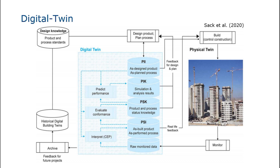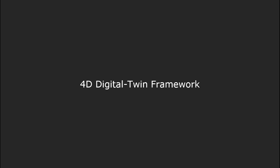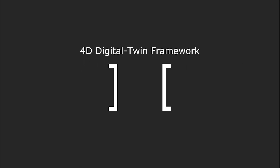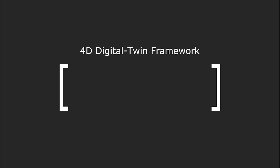The digital twin construction workflow using this system focuses on data collection, state analysis of the building and process, and prediction through the monitoring of the physical twin construction site. Based on this, digital twin analyzes the production system and requires a framework capable of making various predictions. The framework should have a data server and a decision model.